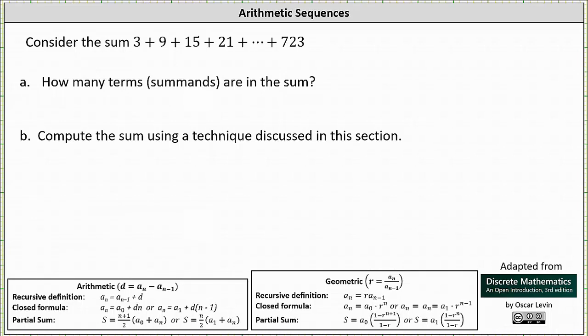We're asked to consider the sum 3 + 9 + 15 + 21 + ... + 723. Part A: How many terms or summands are in the sum? And part B, we're asked to compute the sum using a technique discussed in this section.